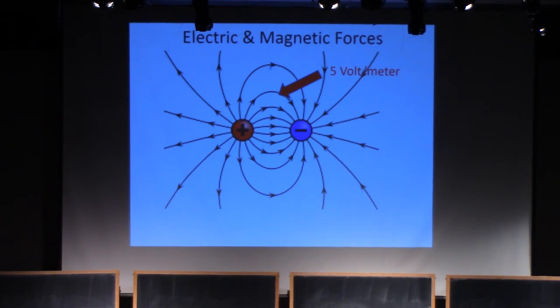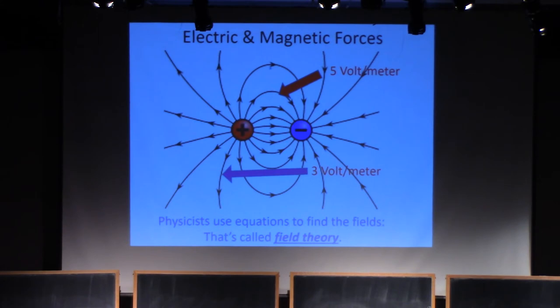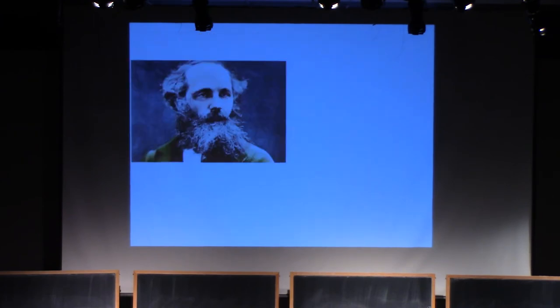Over here, it might be five volts per meter. This magnitude will be a function of position. It will change from place to place. Five volts per meter here, three volts per meter here. If the charges start moving, the magnitude will be a function of space and time. Physicists use equations to find these fields, and that's what's called field theory. Field theory has evolved into something very different here at the PCMI, but that is the traditional notion of field theory.